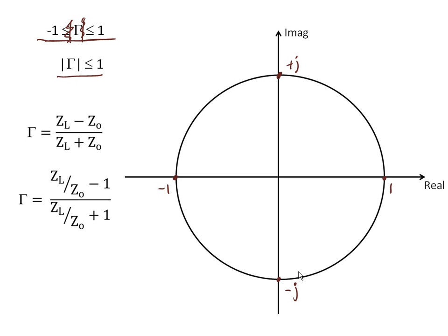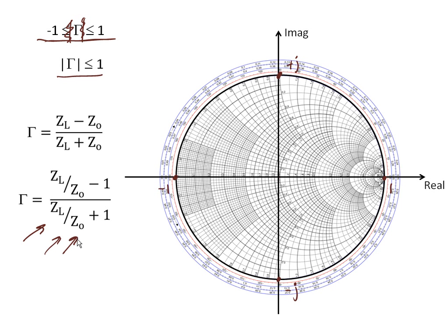On the Argand diagram — the complex plane — every single reflection coefficient, if we were to plot it, would fit between negative 1 and 1 on the real axis, and between positive j and negative j on the complex axis. Everything fits inside this circle, because this circle is essentially where the magnitude of the reflection coefficient equals 1. This is our Smith chart. We take our load and line impedances Z_L and Z_0, and calculate the reflection coefficient. By dividing both numerator and denominator by Z_0, we get a normalized impedance — where we divide by the characteristic impedance of the line — which we plot as a reflection coefficient on the Smith chart. When we perform this mathematical operation on any impedance, we can plot it on the Smith chart.